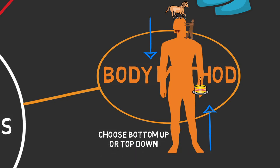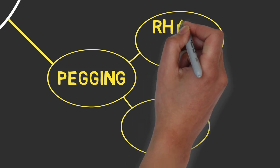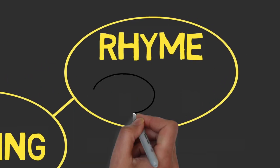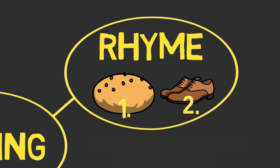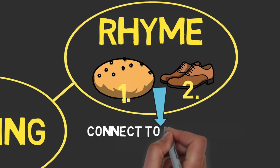And that's it for the body method. There are two peg methods. First, the rhyme method. Come up with rhymes for numbers, such as one bun, two shoe, and so on. Then store whatever you need to memorize in the object.